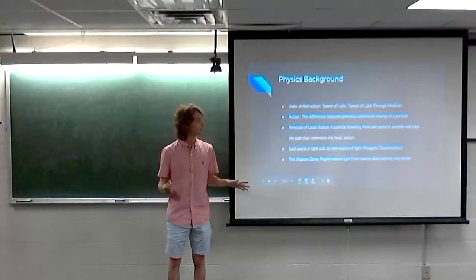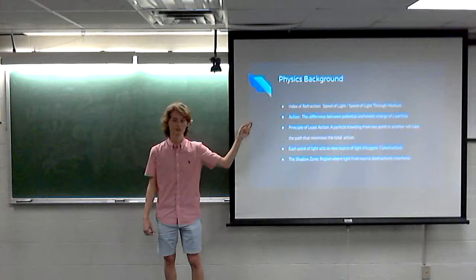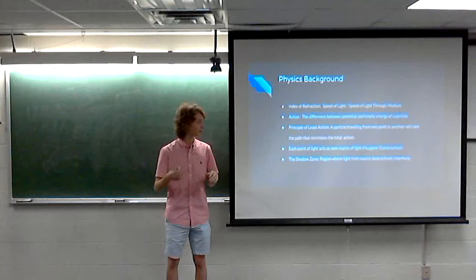First, let me explain the physics background so you understand what we're talking about. The index of refraction is the speed of light in a vacuum divided by the speed of light through the medium.